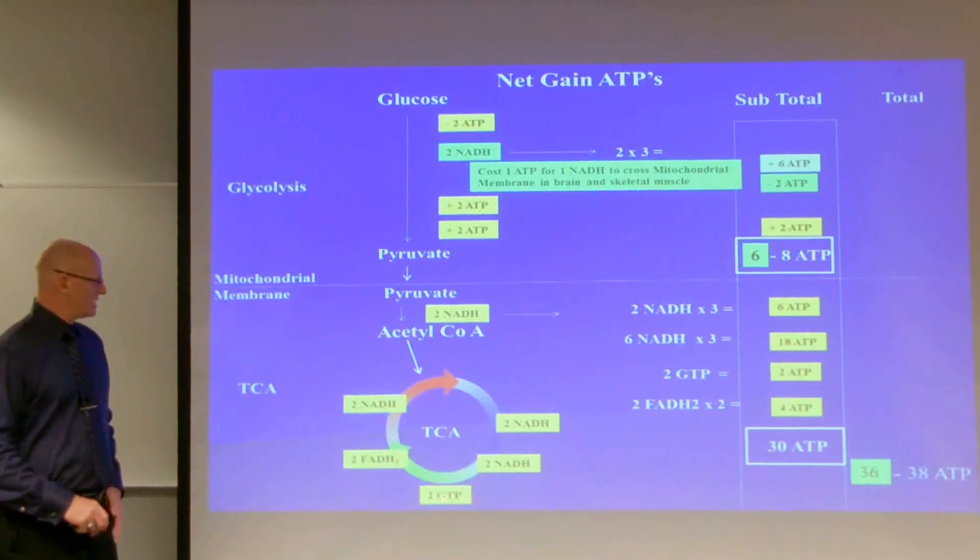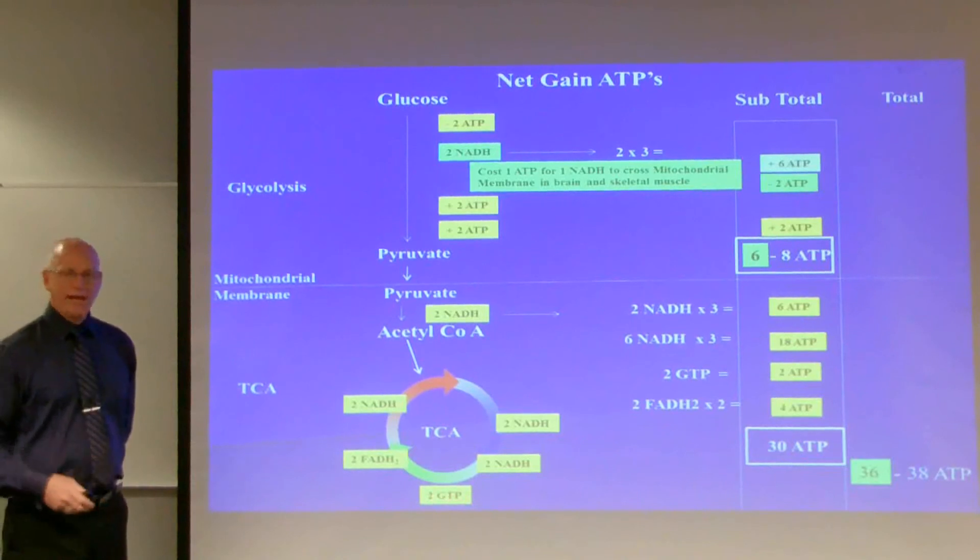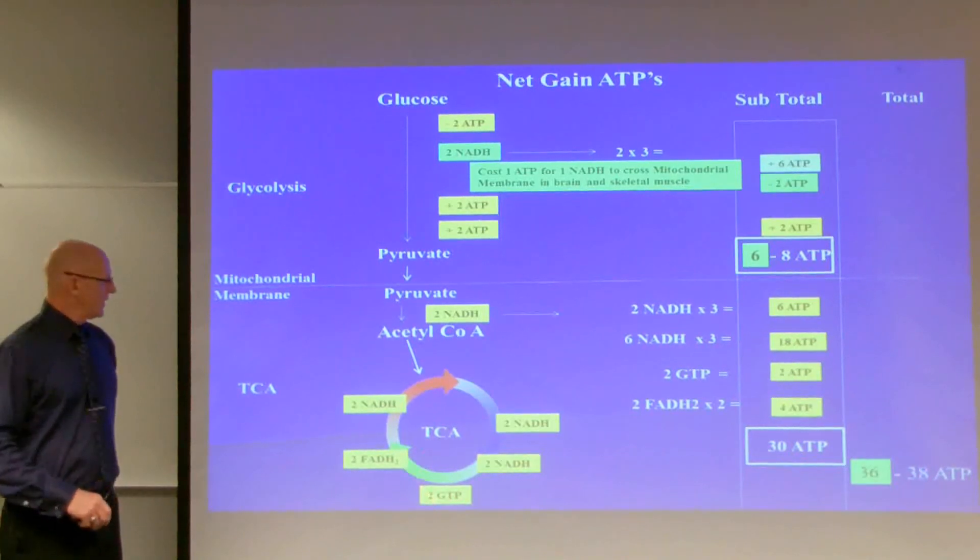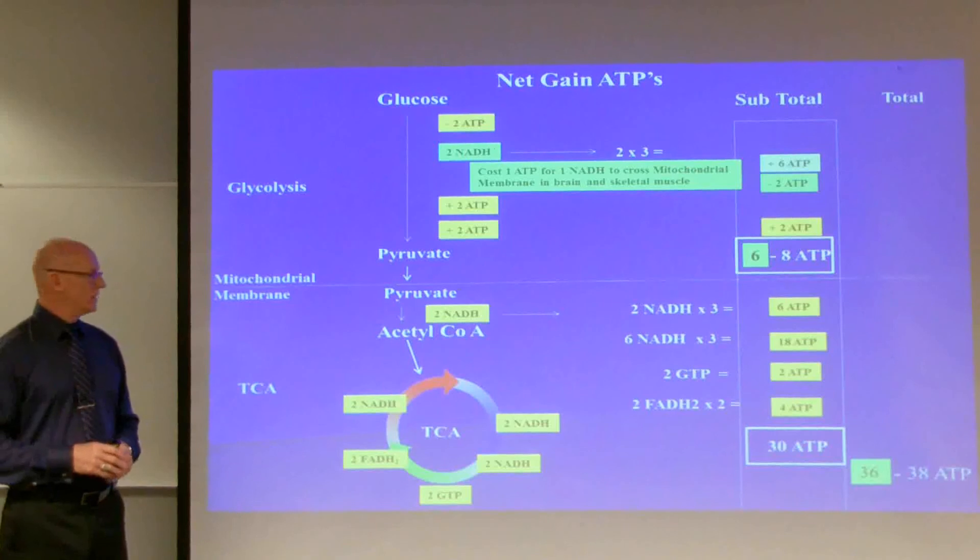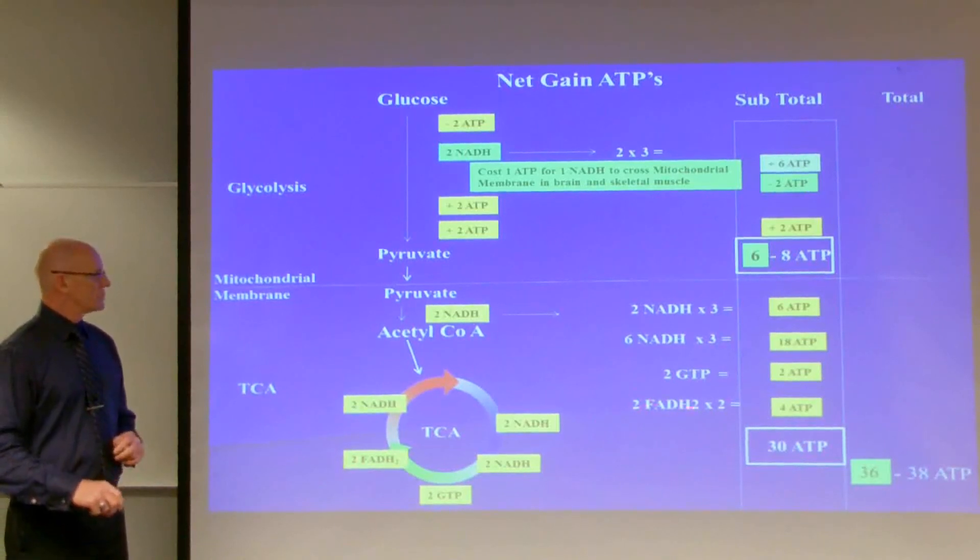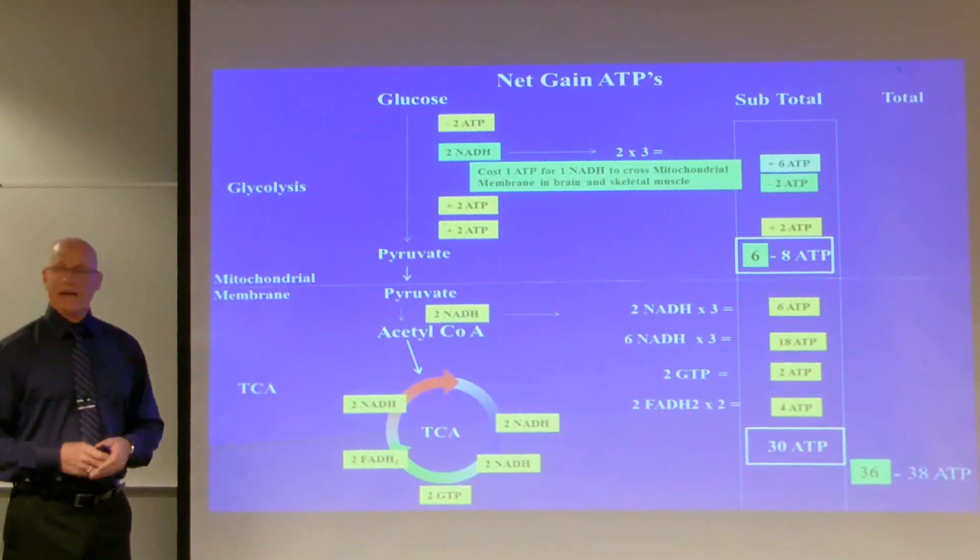And this guanosine triphosphate is equal to an ATP, so there you'll get two ATPs there. And this FADH2 is equal to two ATPs in the electron transport chain. So here we have two of them, so two times two is four, that's four ATPs. So the net gain in the citric acid cycle is 30 ATPs.